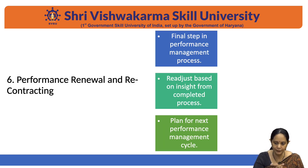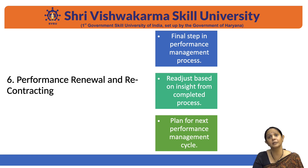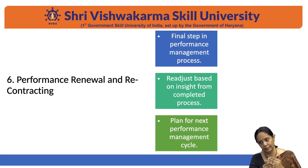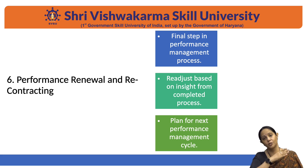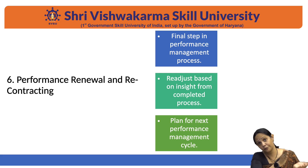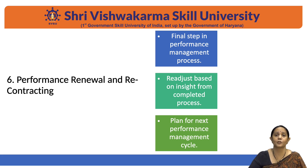The sixth and last step in the process of performance management is performance renewal and re-contracting. This is the final stage wherein, on the basis of insights received, you readjust your objectives and goals for the next cycle. You plan for the next performance cycle — whatever changes were discussed, aspects that could not be done, or aspects that were done very well — and your goals and objectives are redesigned accordingly to be followed in the next cycle. That completes the entire process of performance management.